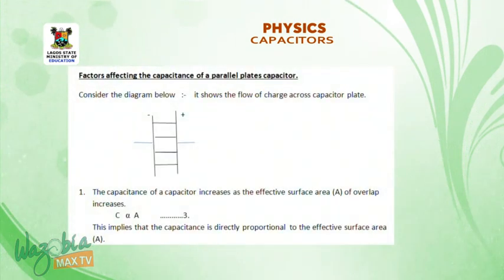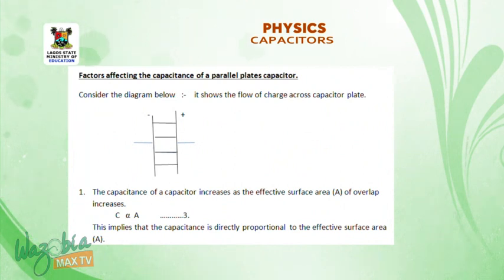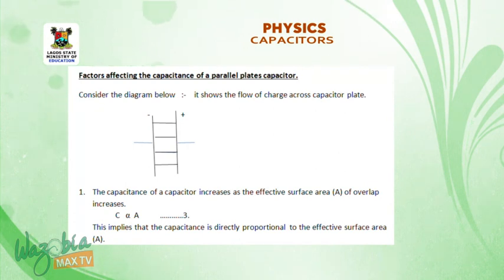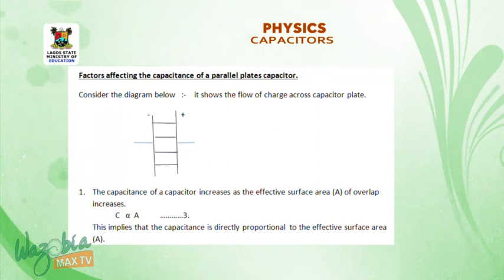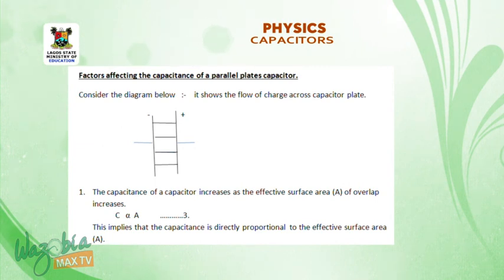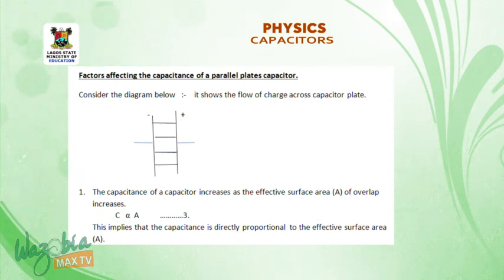Factors affecting the capacitance of a parallel plate capacitor. Consider the diagram below — it shows the flow of charges across capacitor plates, with a positive side and a negative side. One of the factors is: the capacitance of a capacitor increases as the effective surface area of overlap increases. That is, C is directly proportional to A.